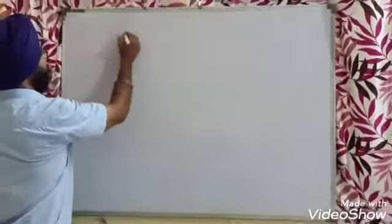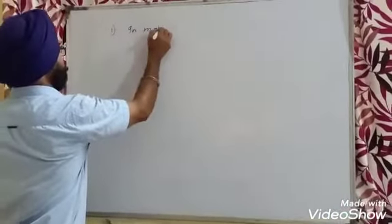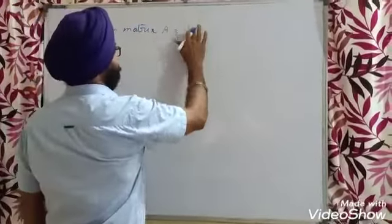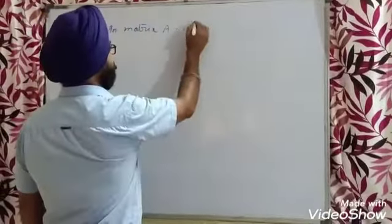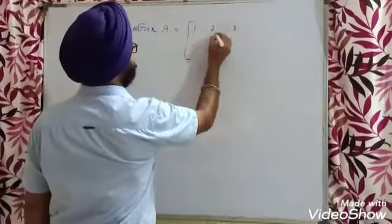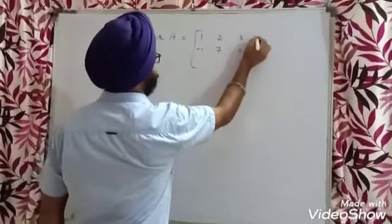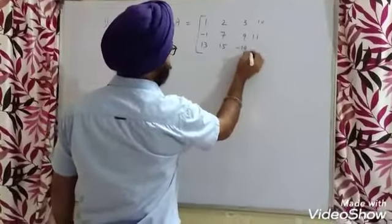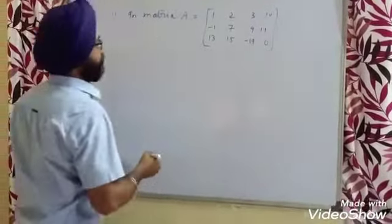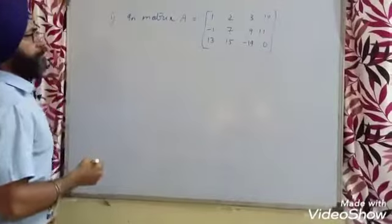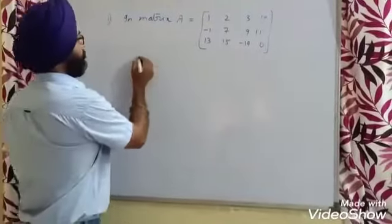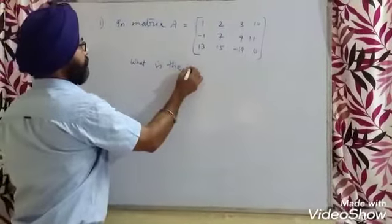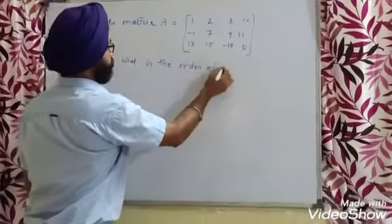For the first example, consider matrix A with entries 1, 2, 3, -1, 7, 9, 10, 11, 13, 15, -19, 0. First question: what is the order of matrix A?